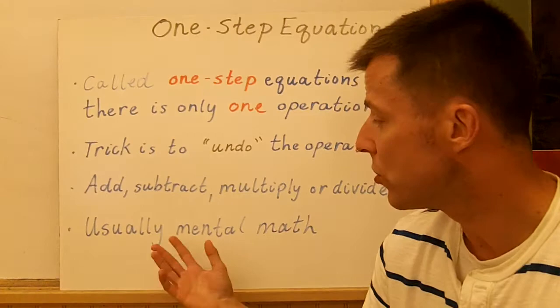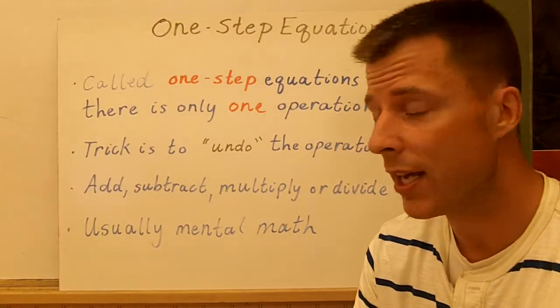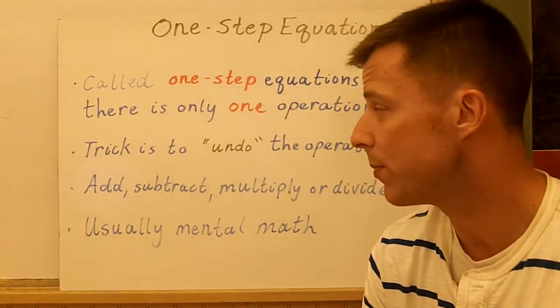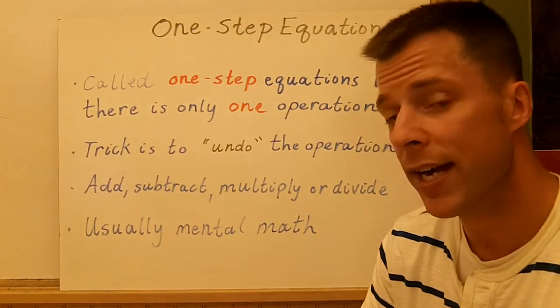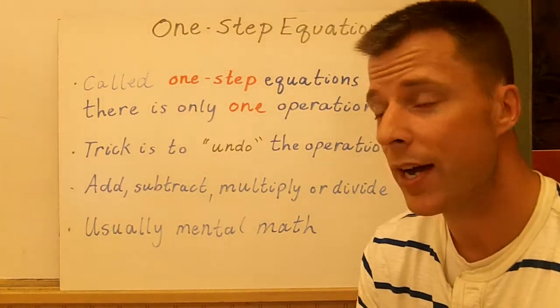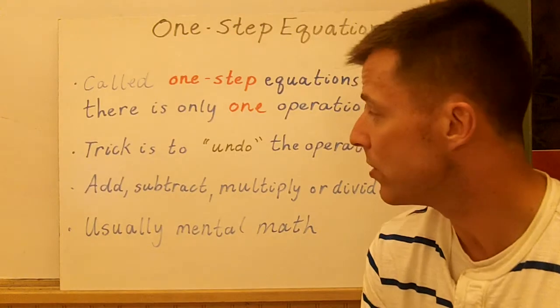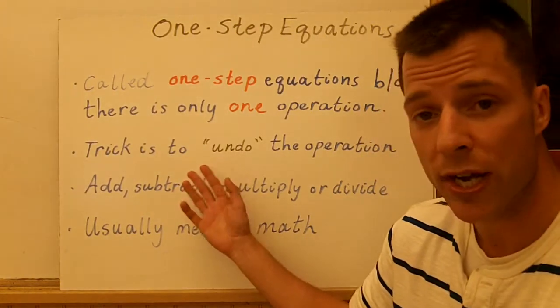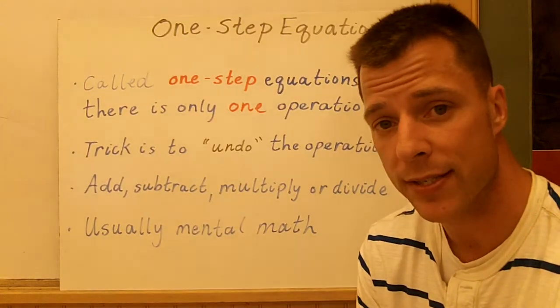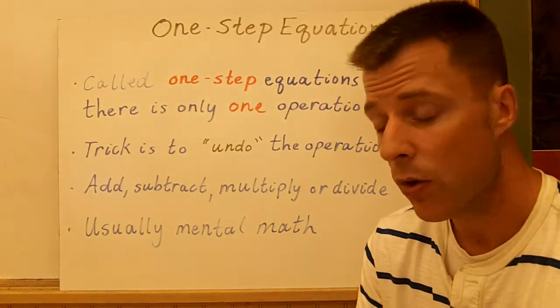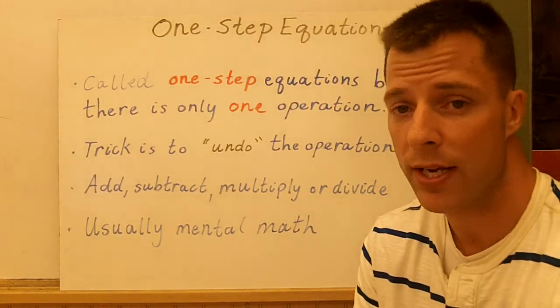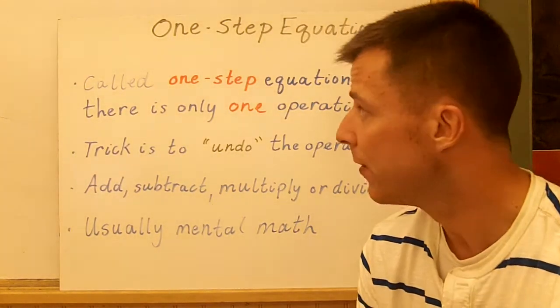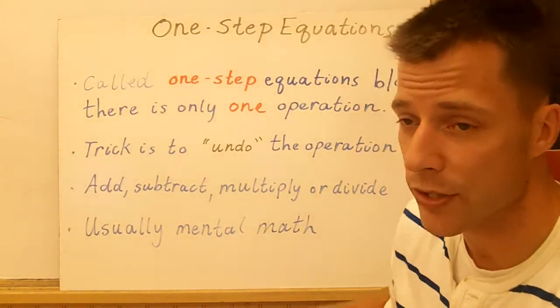A lot of times you can just use mental math to get the answer, and we'll show you some examples where that takes place. You're going to use one of these operations: add, subtract, multiply, or divide to solve these one-step equations. And when you solve an equation, you have to remember you want to get the variable by itself, whether it's x or y or d. You want that variable isolated on one side of the equals sign.